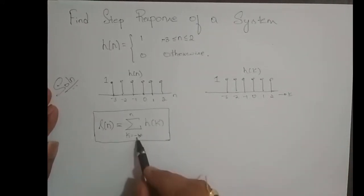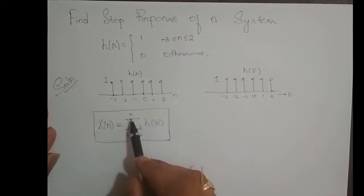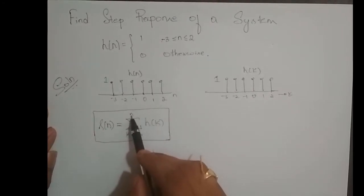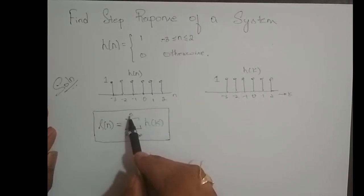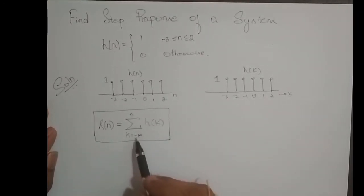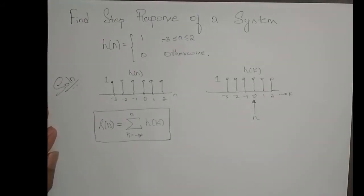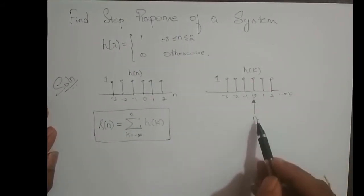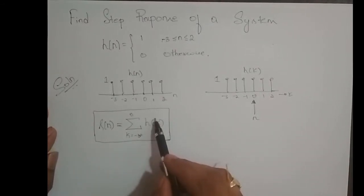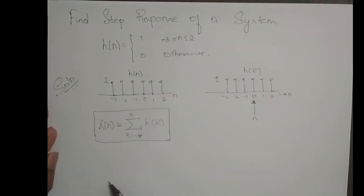K takes the value from minus infinity — just look at the formula, k is varying from minus infinity to n. So k starts from minus infinity, somewhere we cannot reach, and it ends at n. What is n? n has the liberty to move from minus infinity to plus infinity — wherever I want I can keep this n. For example, if I keep n at k equal to 0 in this problem, this will be my slider with index n. If I keep n at k equal to 0, then I need to sum up all the samples of H of k starting from minus infinity up to n equals 0.